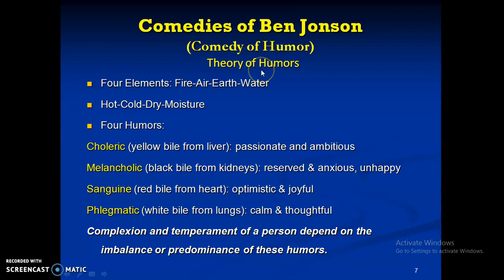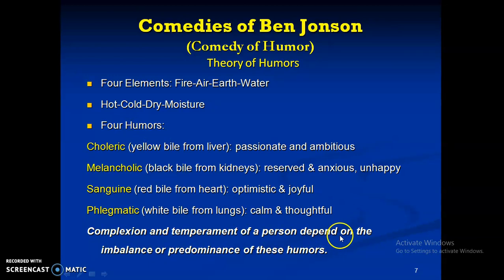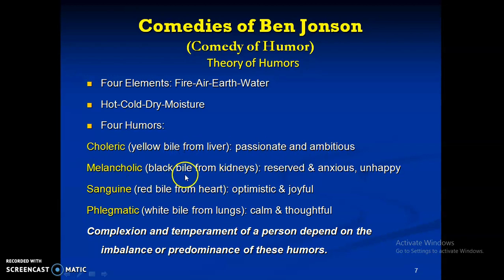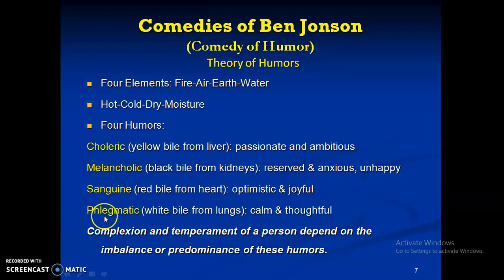It was thought that the complexion and temperament of a person depend on the imbalance or predominant dominance of these humors. Choleric people — with yellow bile from the liver — were passionate and ambitious. Melancholic people — with black bile from the kidney — were reserved, anxious, and unhappy. Sanguine people — under the influence of red bile from the heart — were optimistic and joyful. Phlegmatic people — under the influence of white bile — were calm and thoughtful. Humor means liquid or fluid.